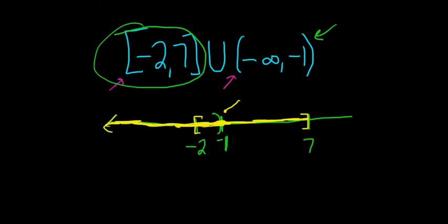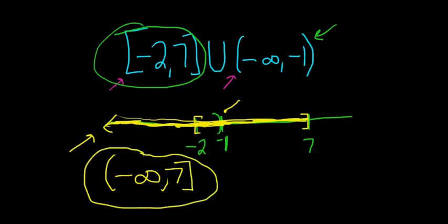So now we can get the answer. It's going to be negative infinity, working left to right, negative infinity all the way to 7. And we include the 7. So that would be the answer in interval notation.